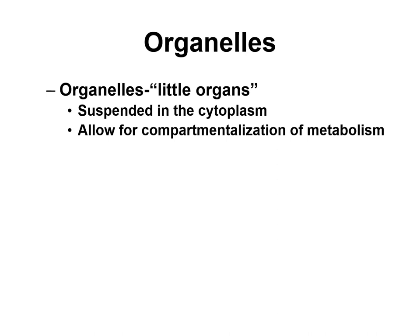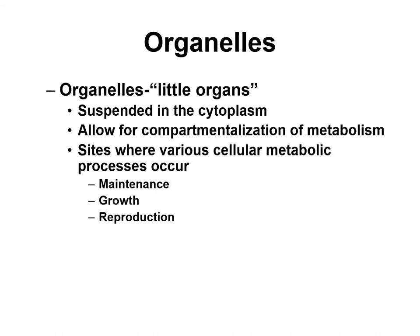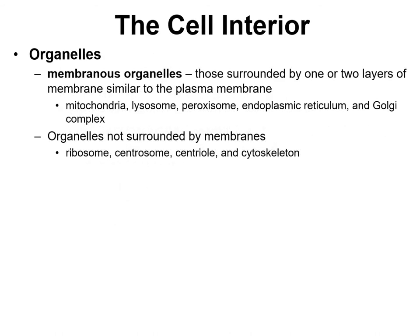The other structures in the cytoplasm are the organelles. Organelles literally means little organs. They're suspended in the cytoplasm and are where metabolism occurs — different metabolic processes occur at or within these different organelles, allowing for compartmentalization of metabolic processes. They are sites involved in maintenance, growth, and reproduction of the cell. Many organelles are surrounded by a membrane similar to the plasma membrane, including the mitochondria, lysosome, peroxisome, endoplasmic reticulum (both rough and smooth), and the Golgi apparatus — these are called membrane-bound organelles.